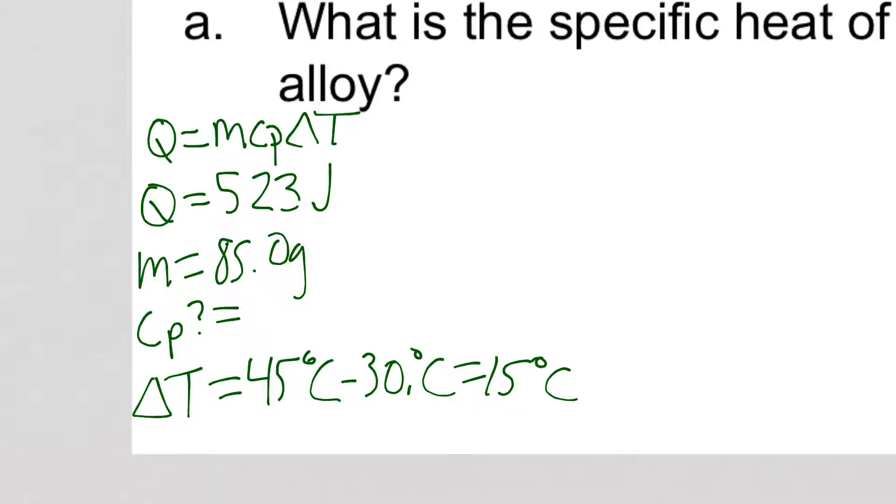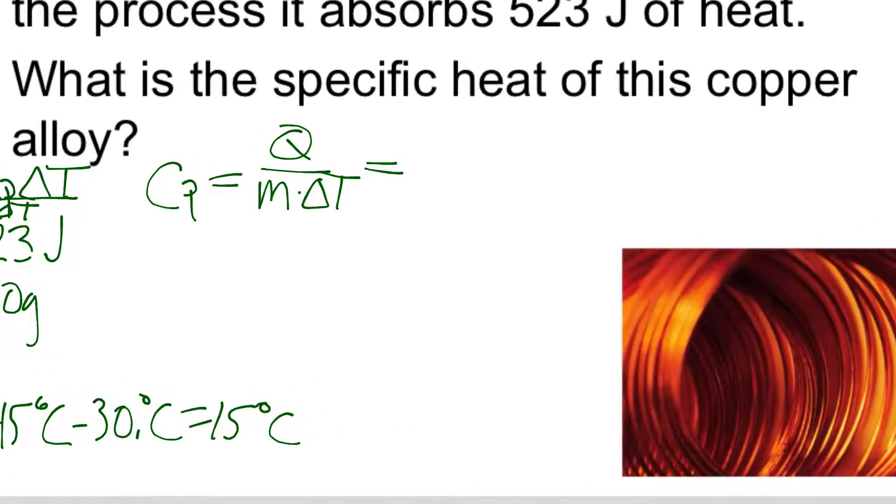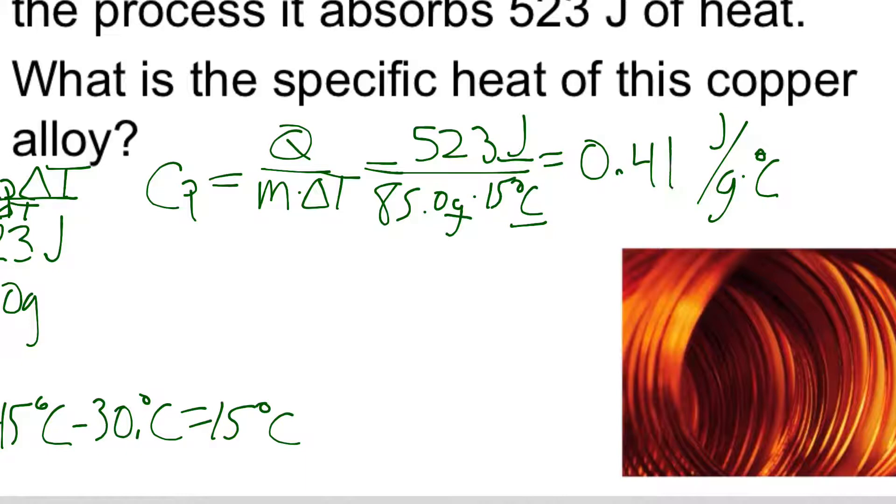In order to determine Cp, I want to divide both sides by M delta T. So Cp is equal to Q over mass times delta T. So now that I have my information here, I can substitute it in. Q is my 523 joules all over 85.0 grams times 15 degrees Celsius. And I can see my units are joules over grams times degrees Celsius. And significant figures would tell me 2. So 0.41 joules per gram degrees Celsius.